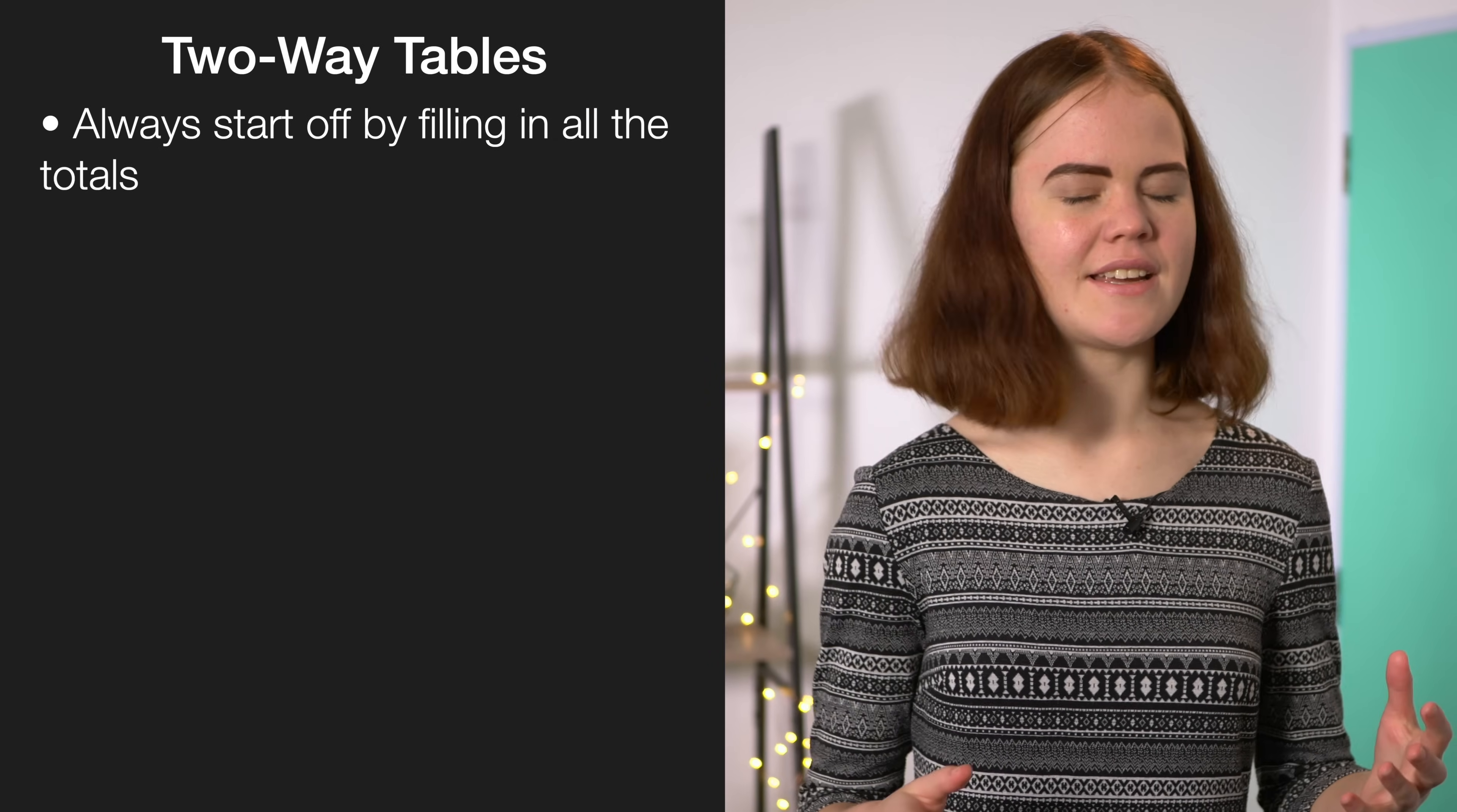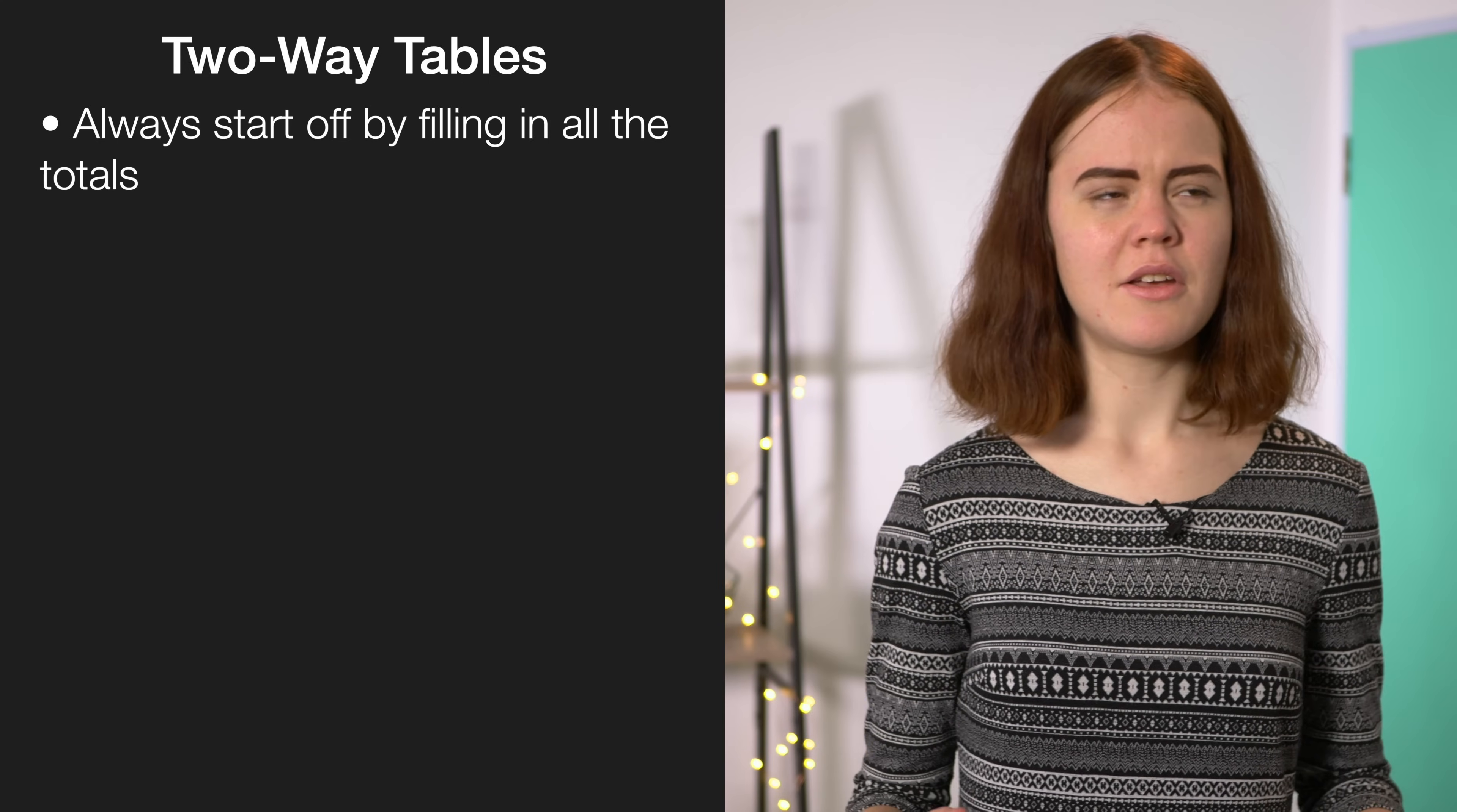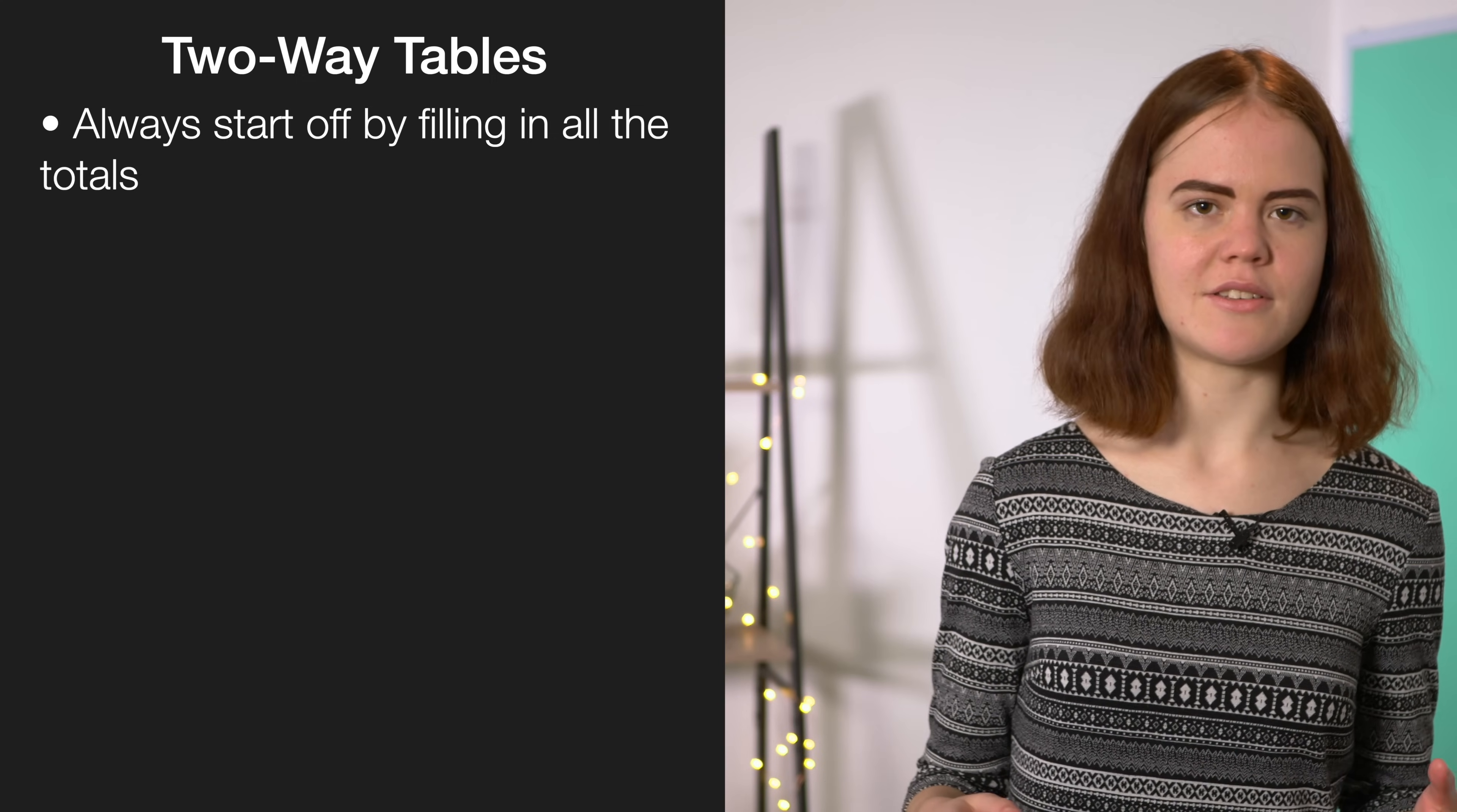For two-way table questions, you should always start by filling in the totals, even if there isn't a space in the table for you to do that. It will make the rest of the question a lot easier. Two-way table questions also almost always include a relative risk question, which are probably the easiest excellence marks to get on the exam because they involve the least complex maths. So let's run through a simple example so you can be ready to lock down those E marks.